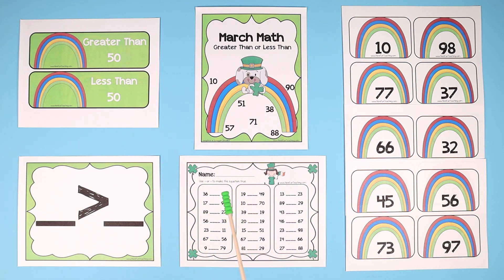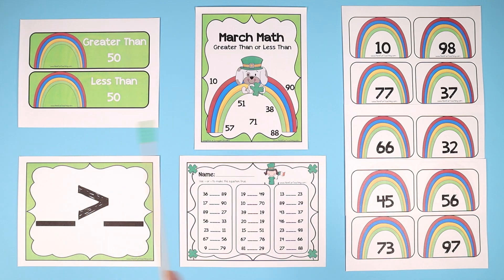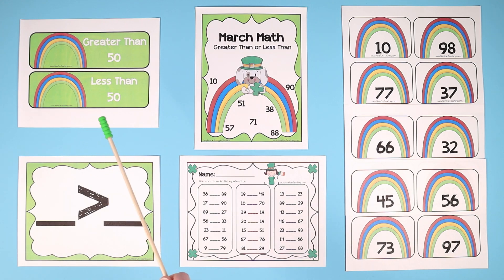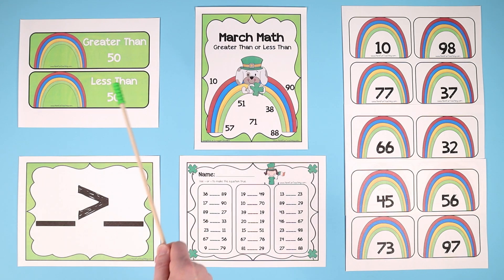Print this out from havefunteaching.com, cut out the flashcards that come with it, and then start having your kids sort the numbers by greater than 50 or less than 50.